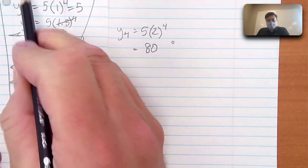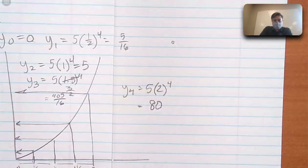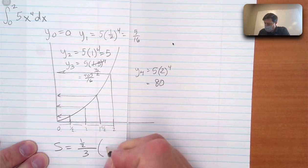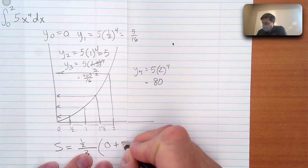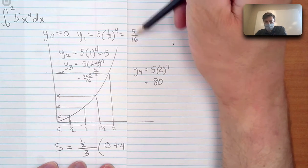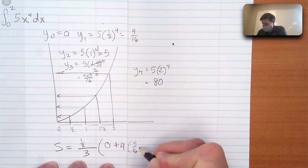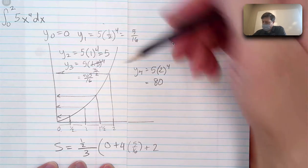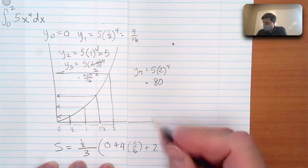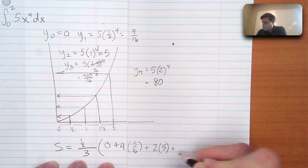Multiplied by the singleton, y is 0, plus 4 times y1, 5 over 16, plus 2 times the next one up. So that's 2 times 5.